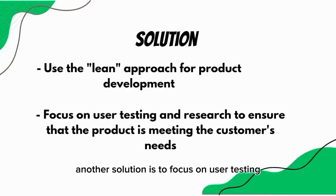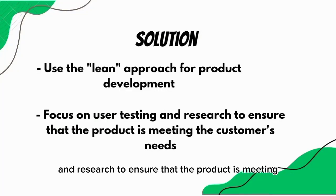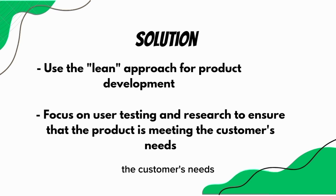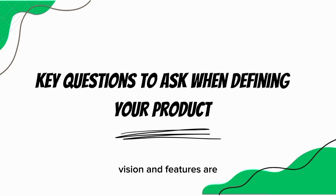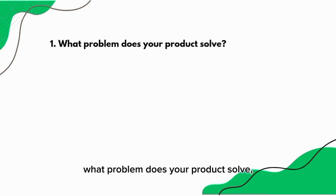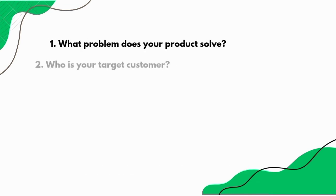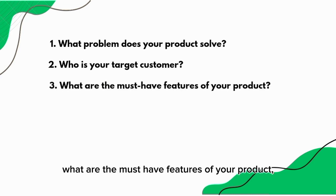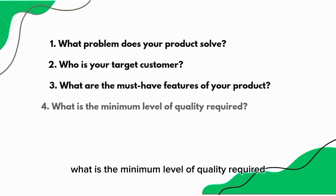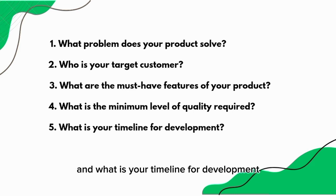Another solution is to focus on user testing and research to ensure that the product is meeting the customer's needs. Some key questions to ask when defining your product vision and features are: what problem does your product solve, who is your target customer, what are the must-have features of your product, what is the minimum level of quality required, and what is your timeline for development.